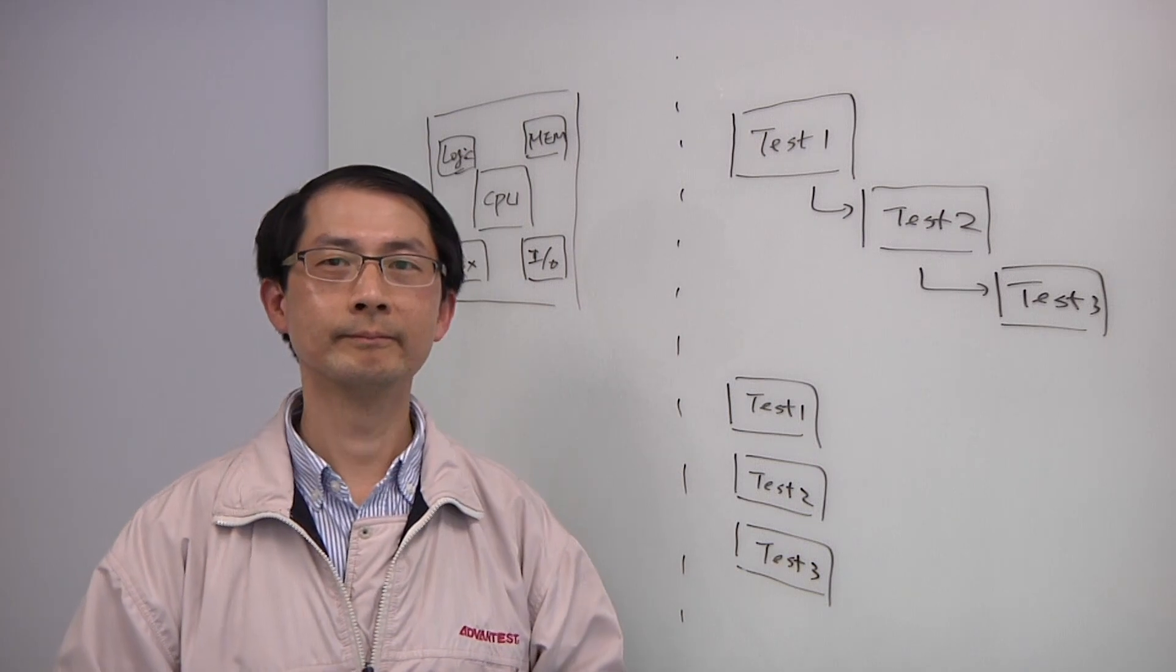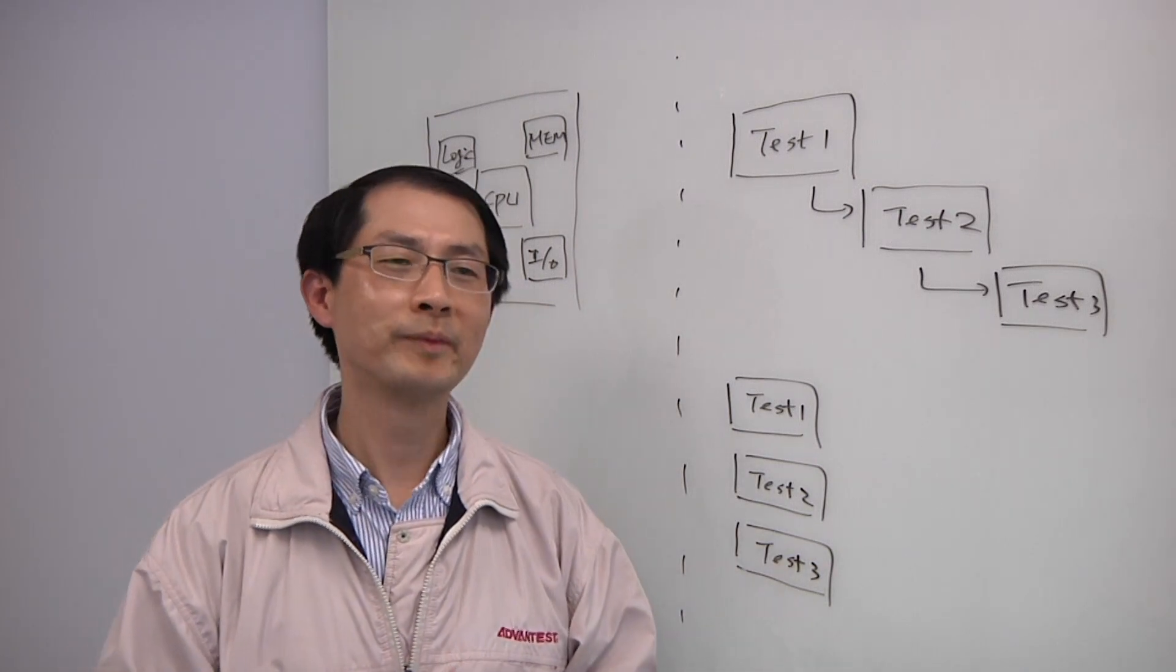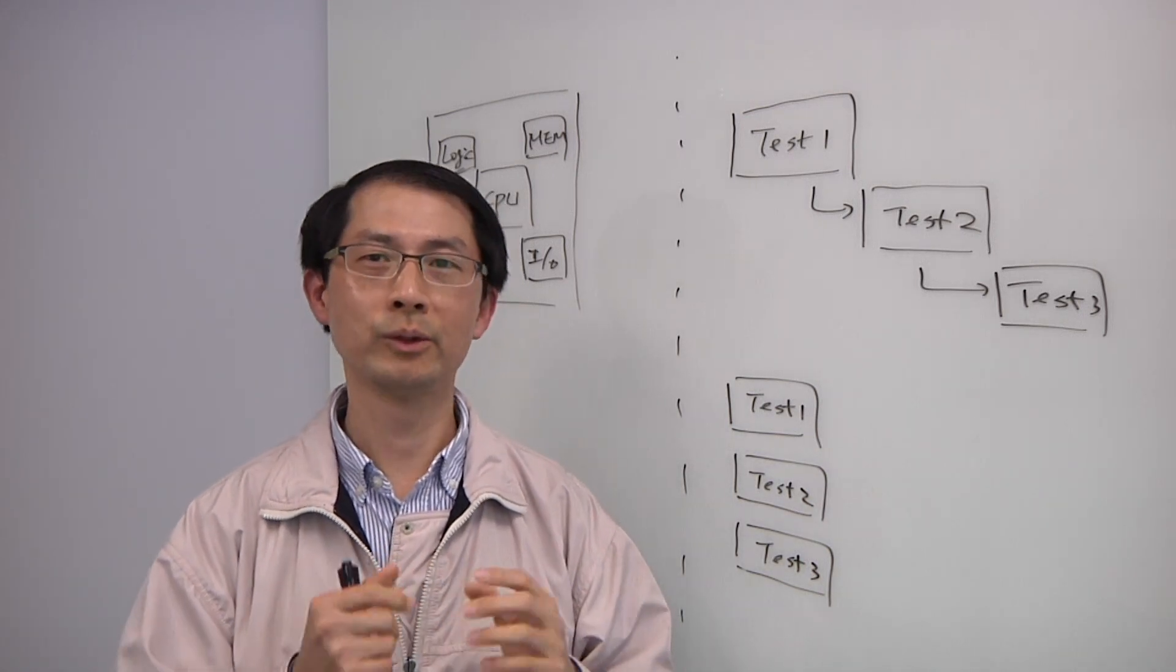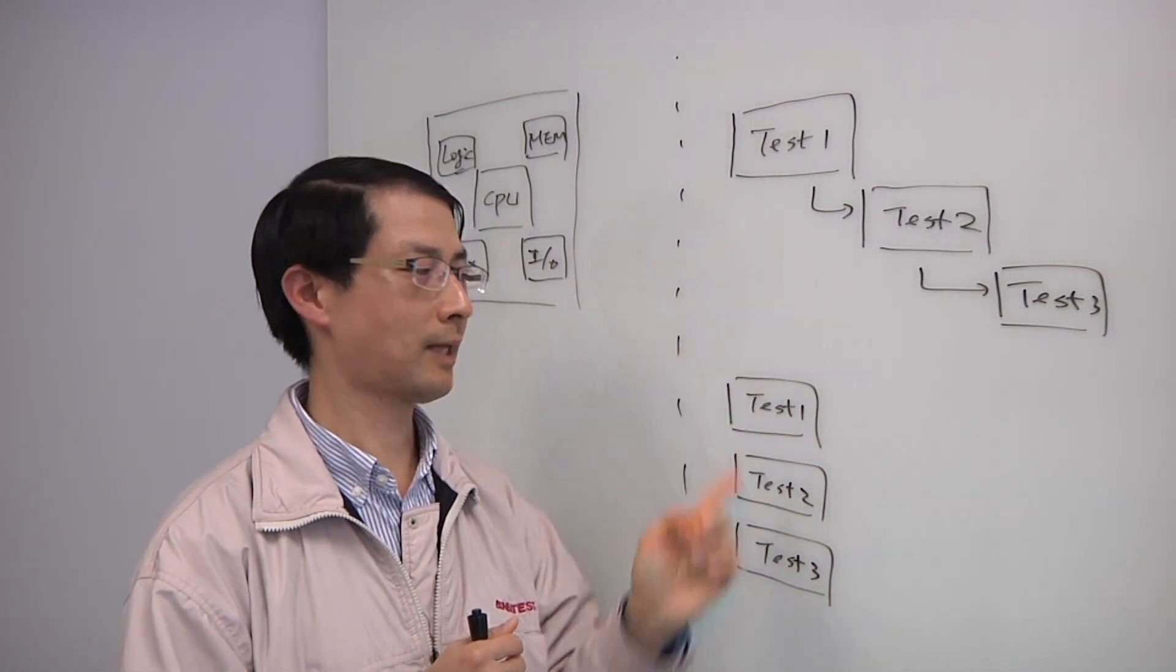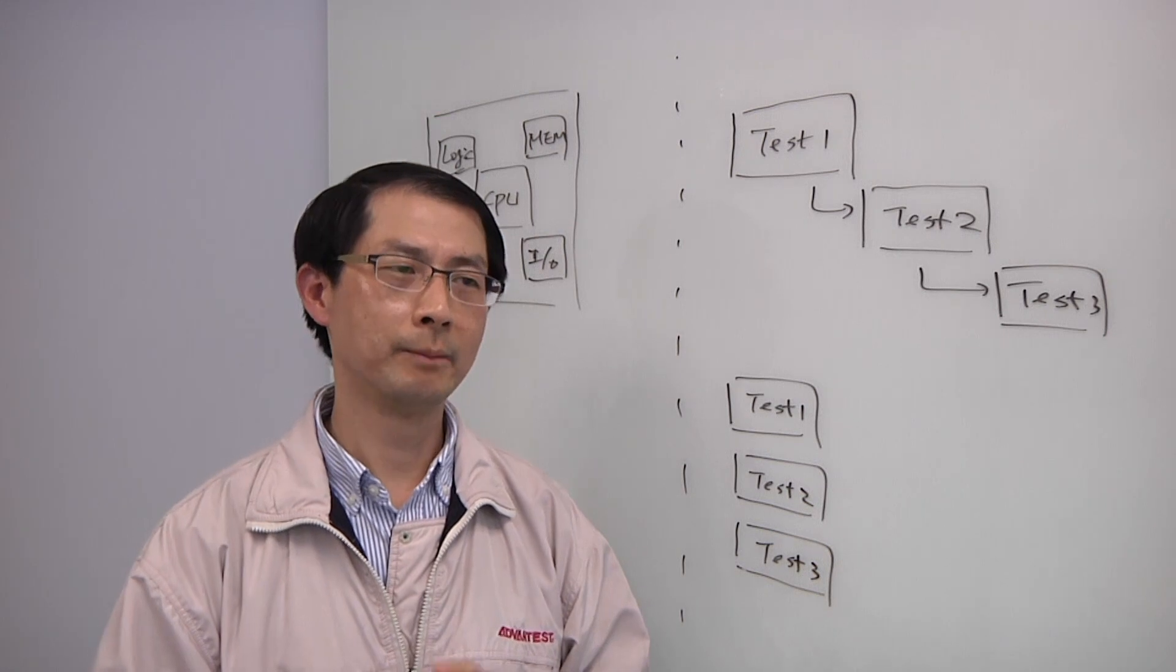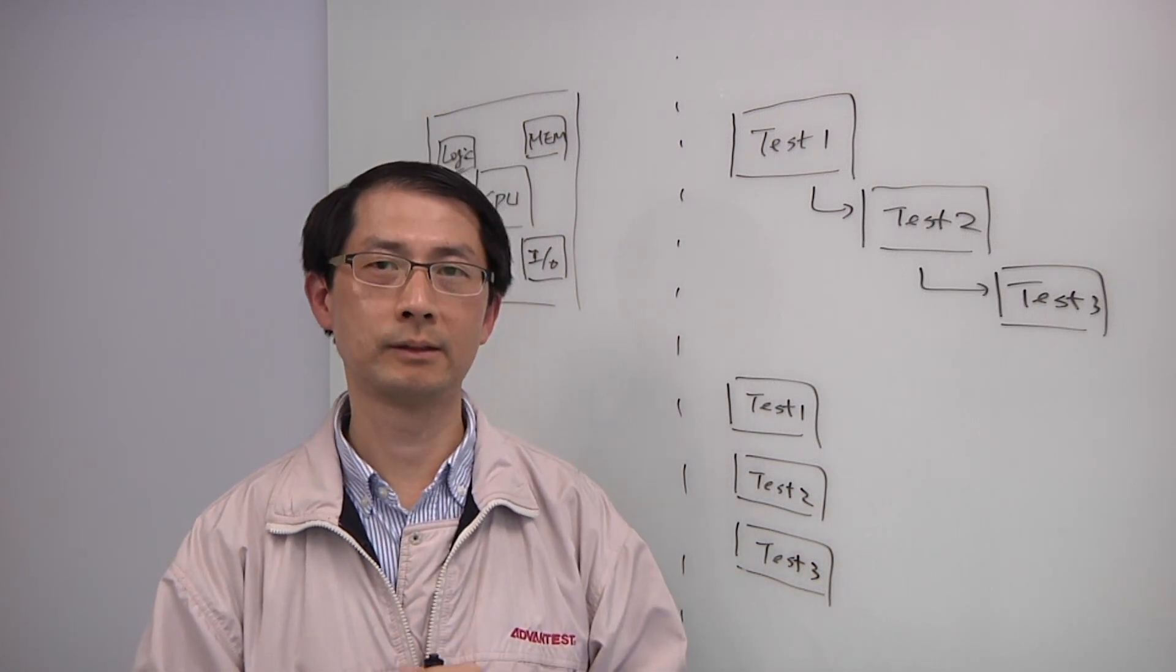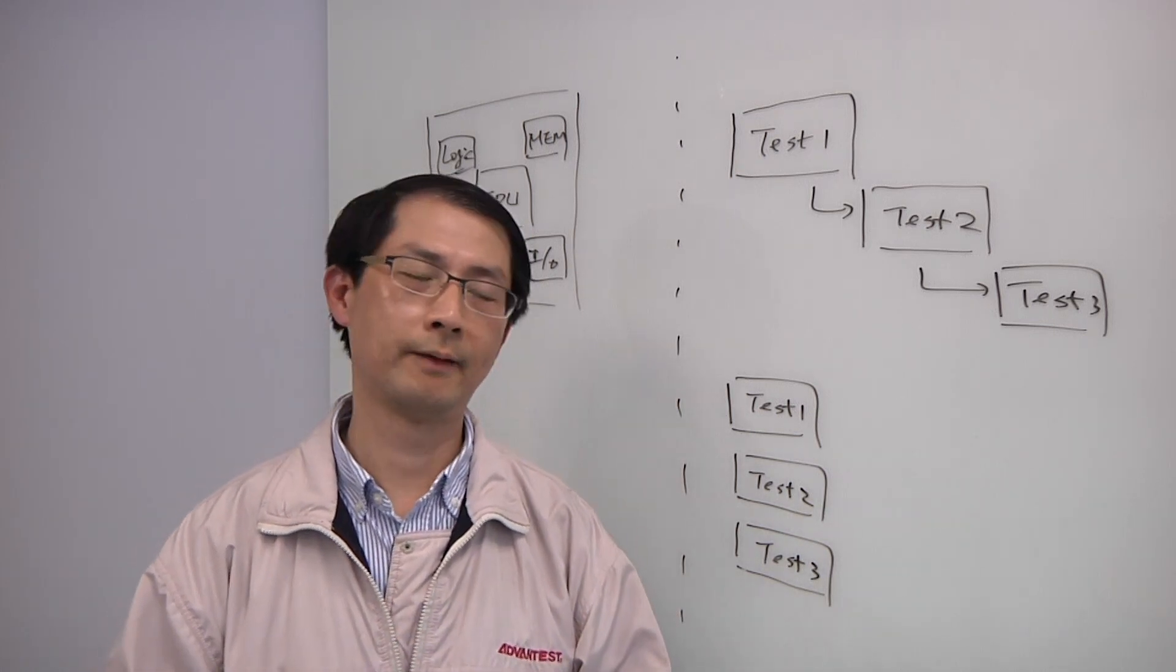So what can go wrong when you test them all together? Some tests, some circuits, especially RF circuits, they can interfere to each other. So in that case, probably you cannot do this type of test. You cannot test them all at the same time. But in most of the circuits, memory circuits, logic circuits, the rest of the mixing circuits, we can test them at the same time. That can really save test time.